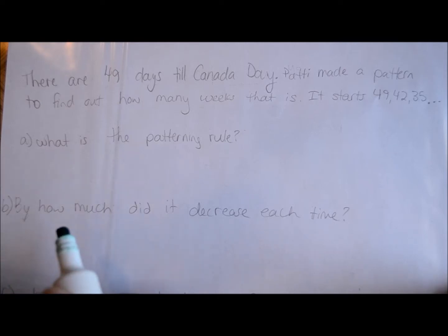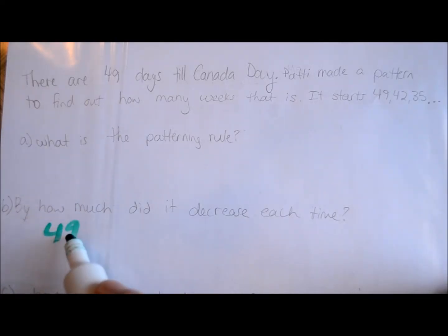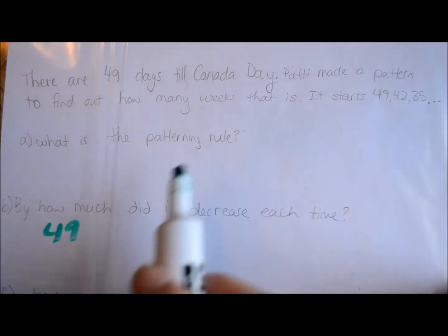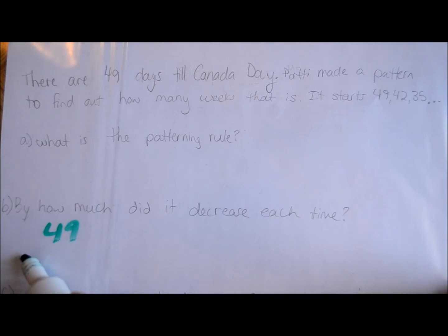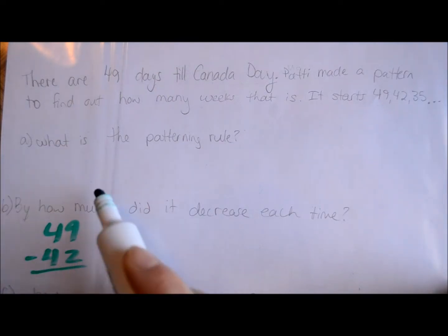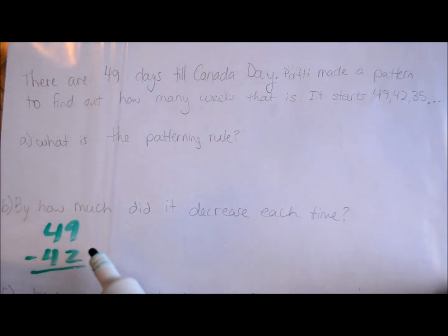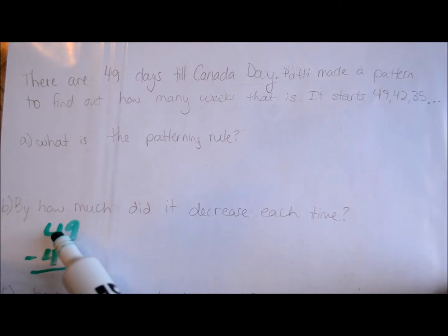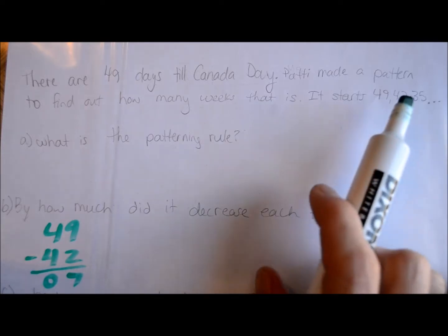To figure out how much it decreased, I'll answer question B first. It started at 49 and then the next number was 42. So I'm going to take 42 away from 49 and see what the difference was. 9 take away 2 is 7, 4 take away 4 is nothing. So that time it decreased by 7.